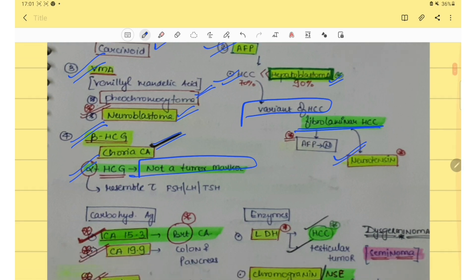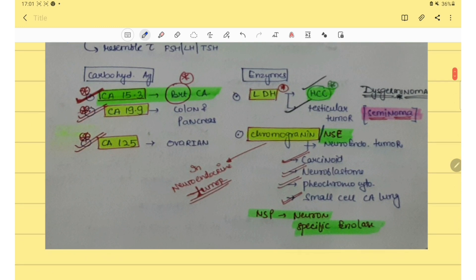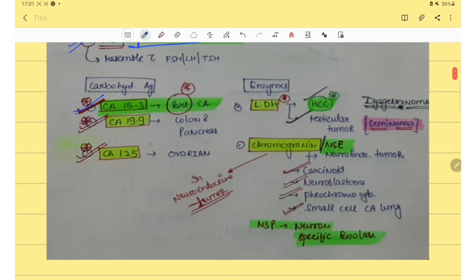Neurotensin is raised in fibrolamellar HCC. In carbohydrate antigen we have CA 15.3 that is raised in breast CA, CA 19.9 colon and pancreas, CA 125 in ovarian. LDH is used as a marker in HCC and testicular tumor, that is in seminoma. Then chromogranin is raised in neuroendocrine tumor. Examples for neuroendocrine tumors are carcinoid, neuroblastoma, pheochromocytoma and small cell carcinoma.